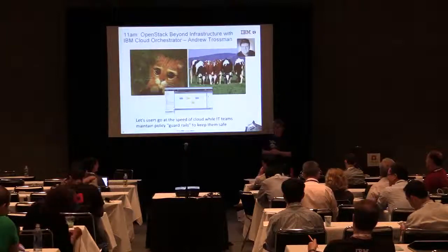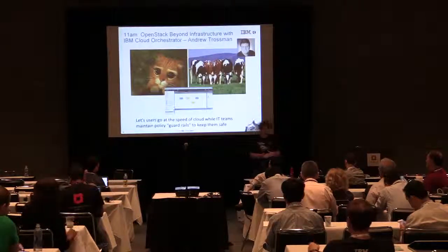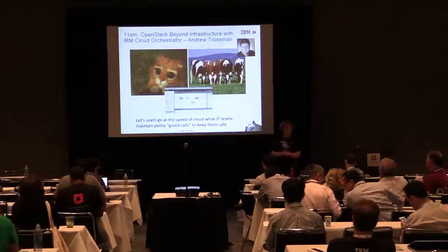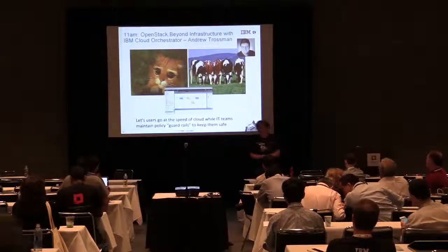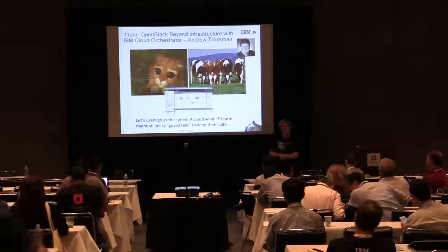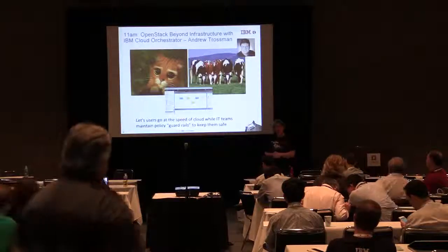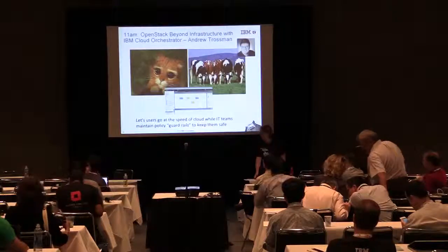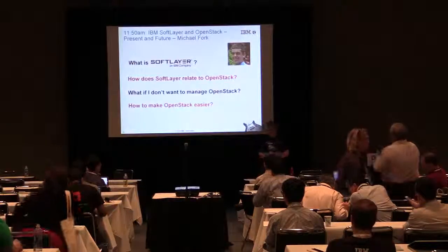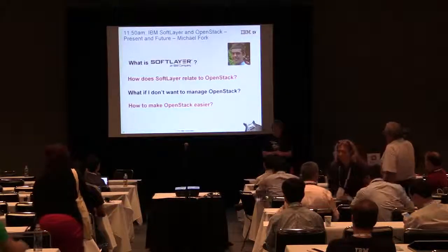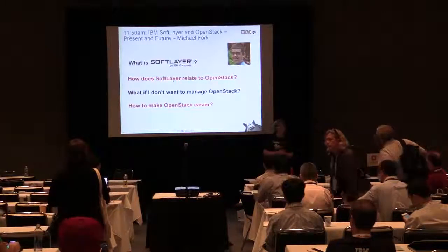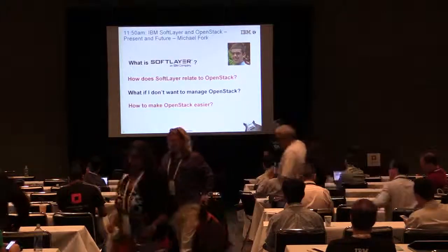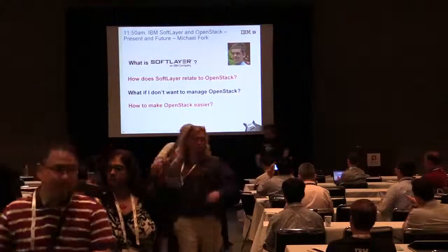Next up, Andrew Trostman will be talking about Smart Cloud Orchestrator — and kittens and cows — starting in about 30 minutes. At 11:50, Michael Fork will be talking about OpenStack and SoftLayer. Thank you for coming.